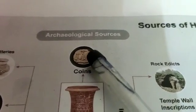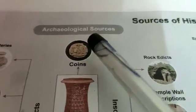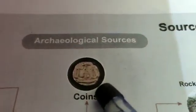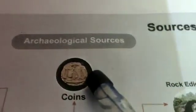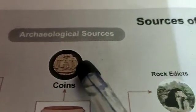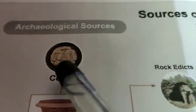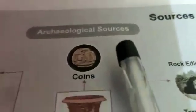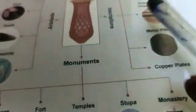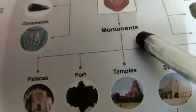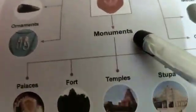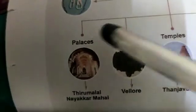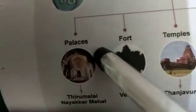If you look at the metal, you can identify the name. Looking at the coin, if there is a king's name or symbol on the coin, you can derive the name of the ruler from it.